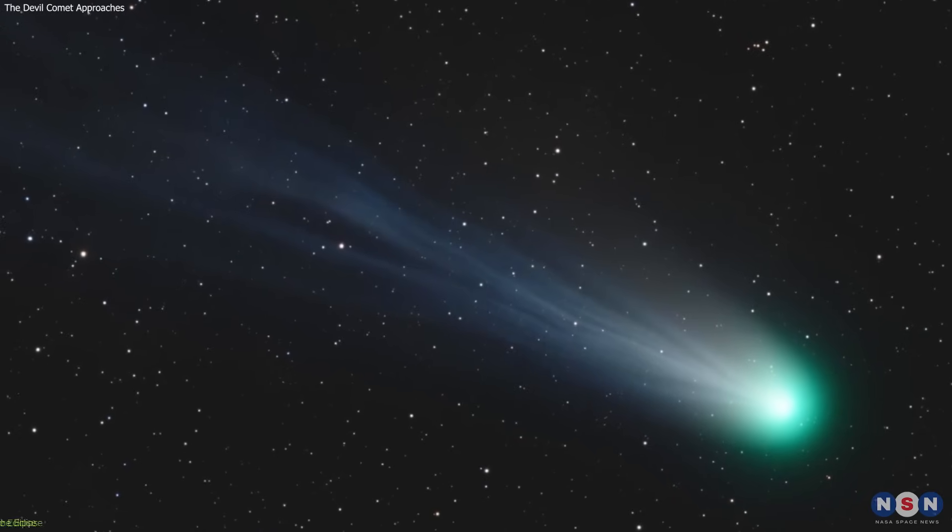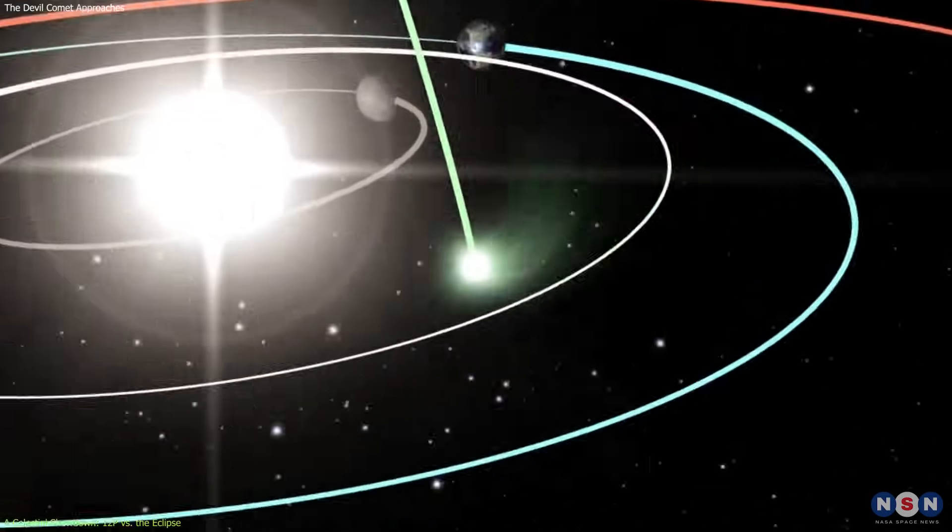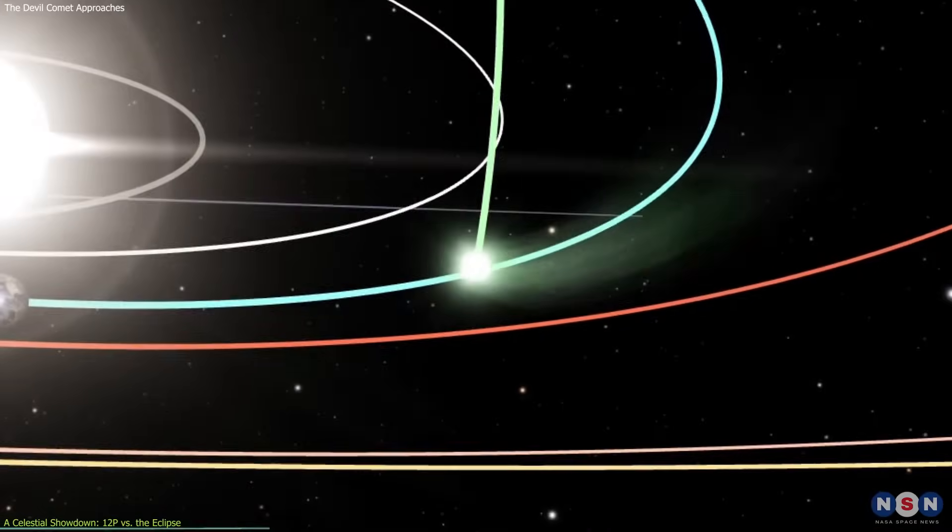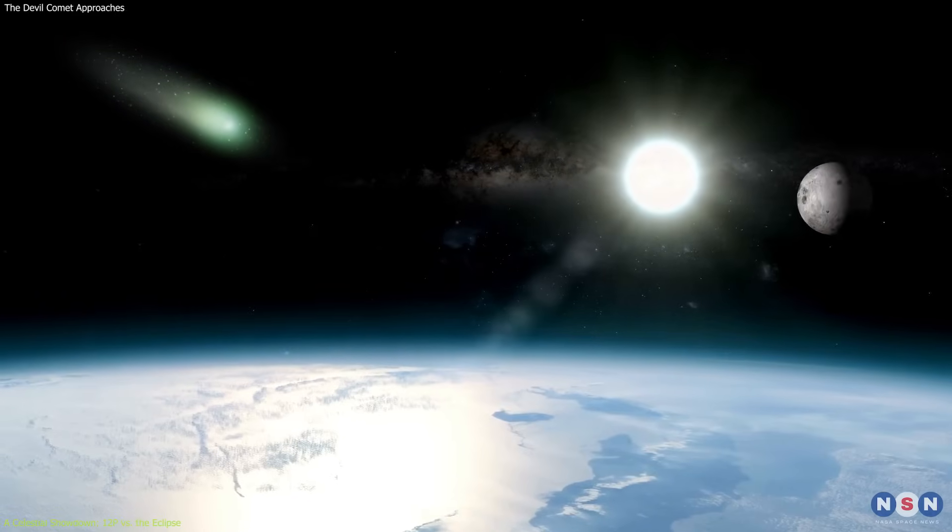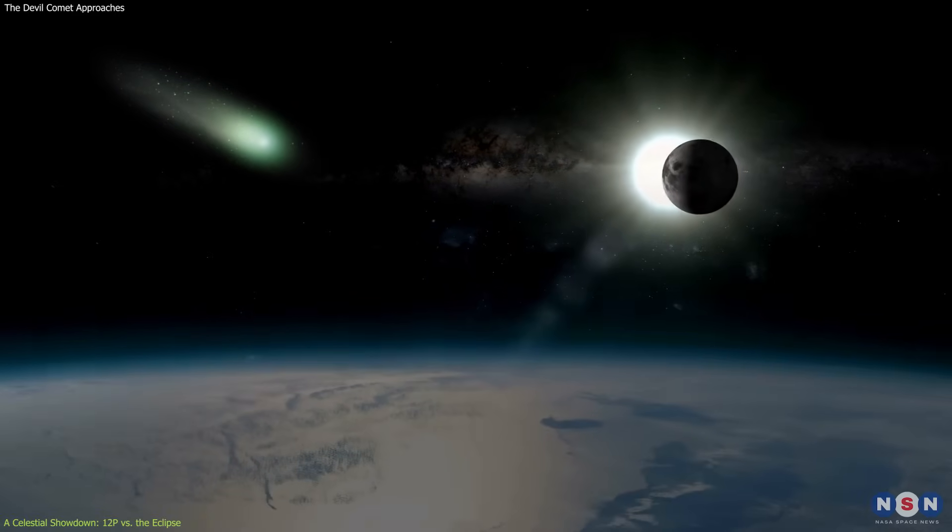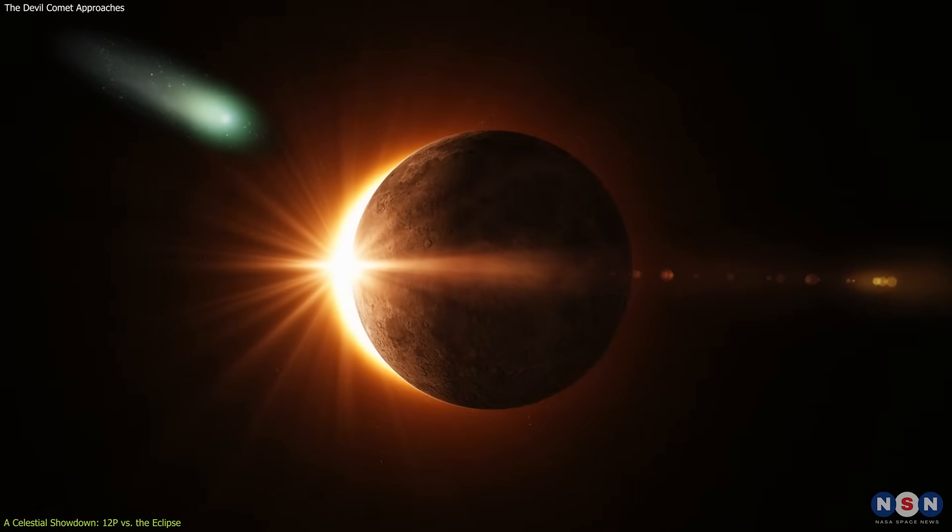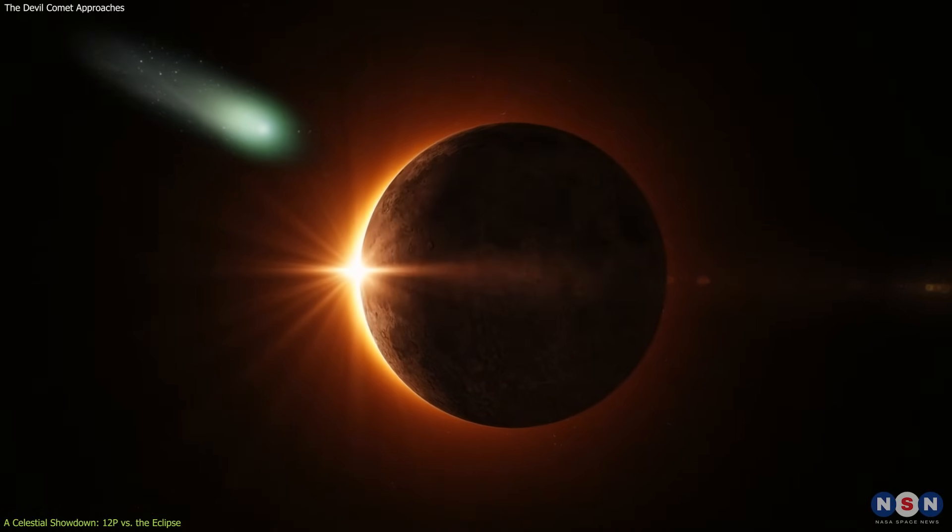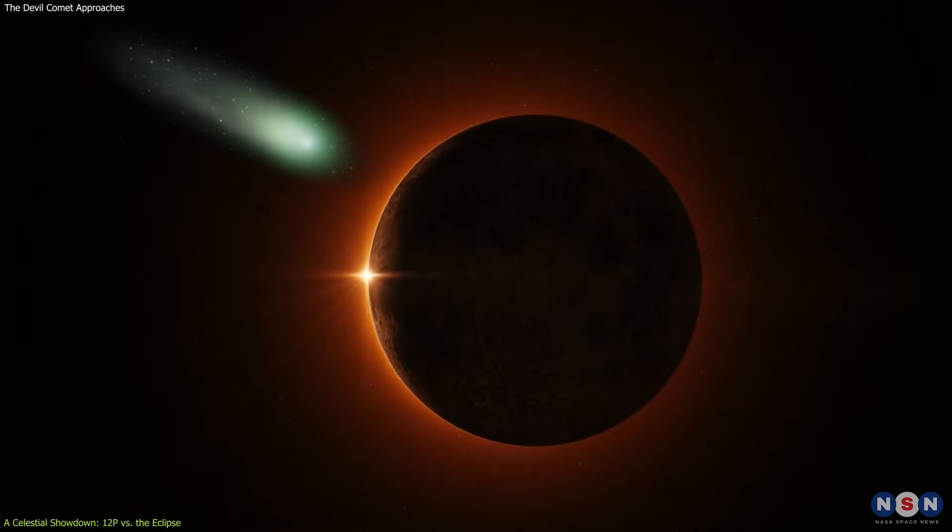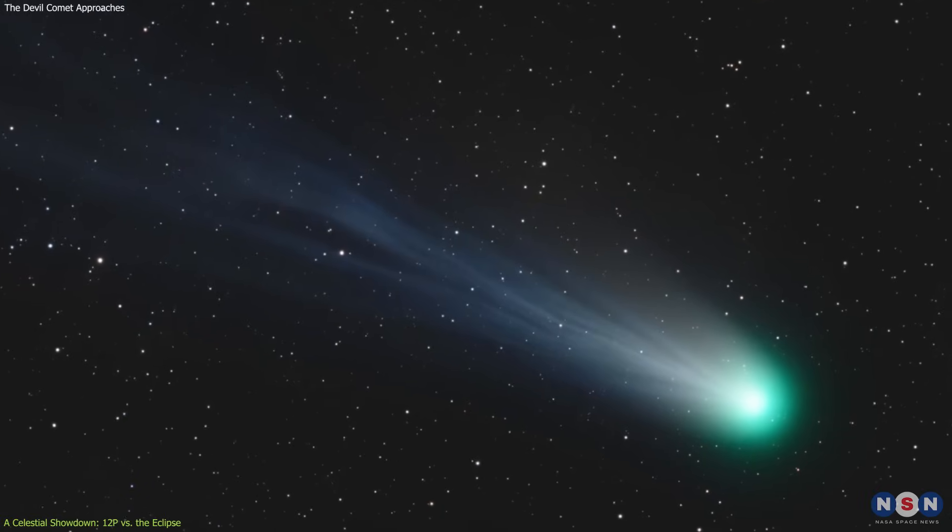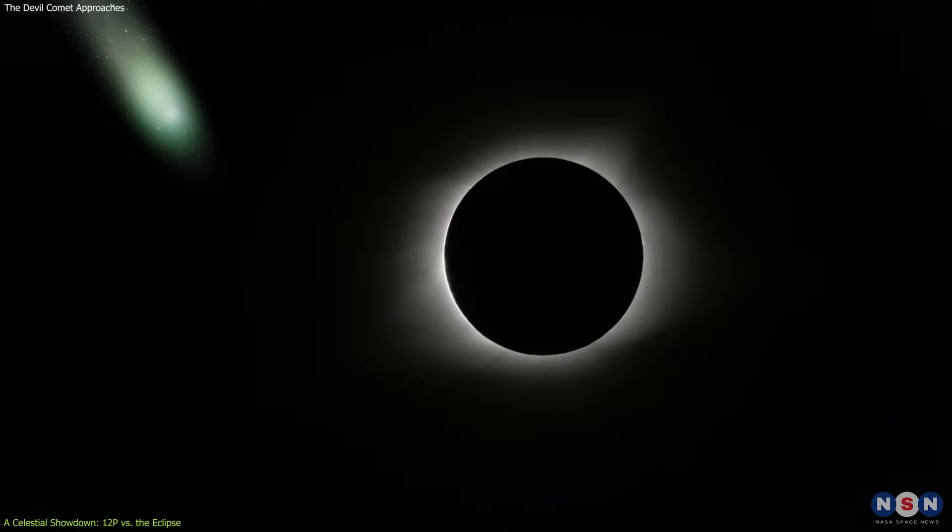This comet is set for a celestial showdown. As it hurtles through the inner solar system at a breathtaking speed of 40,000 miles per hour, it is on a collision course with a cosmic event of equal magnitude, the total solar eclipse on April 8th. The anticipation surrounding the comet's appearance during the eclipse is palpable. If conditions align, 12P could offer a once-in-a-lifetime spectacle, adding a streak of brilliance to the darkened sky.